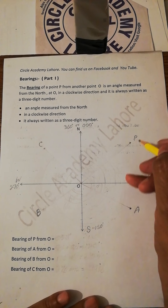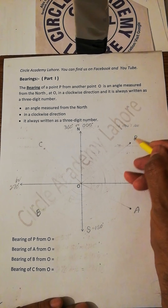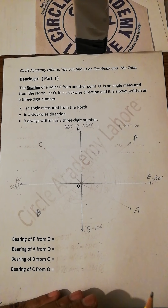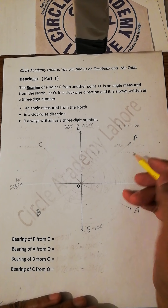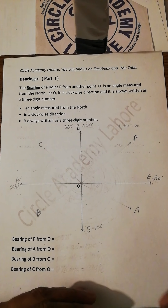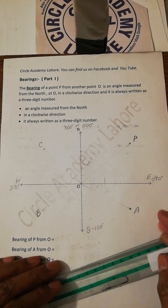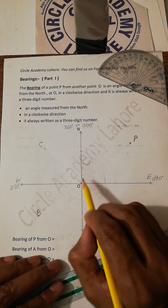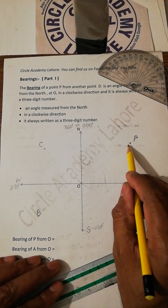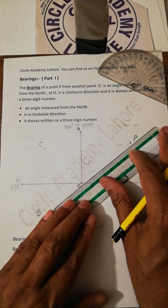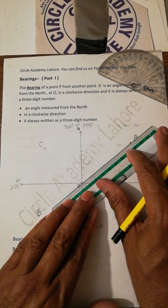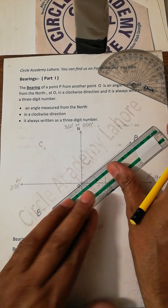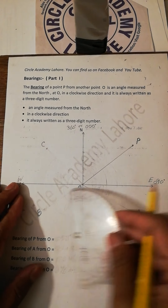Now let us consider a point P which you can see is lying in this quadrant. We have to find out the bearing of point P. If the bearing is not given, you have to measure with the help of the protractor the angle rotated from north till the line joining O and P. First of all you have to draw a line joining O and P.